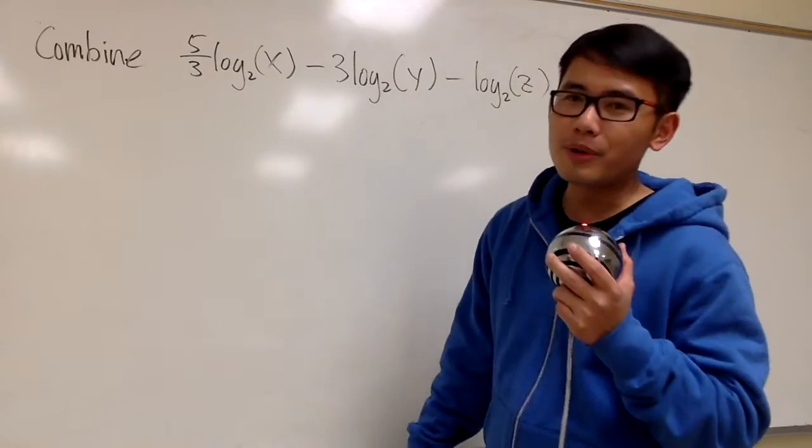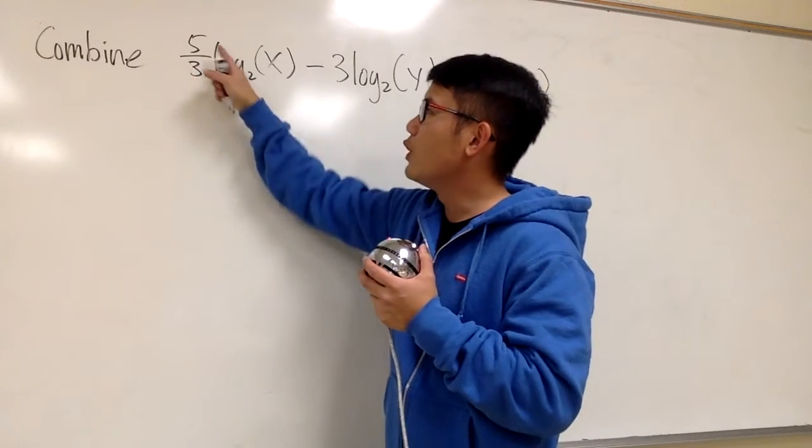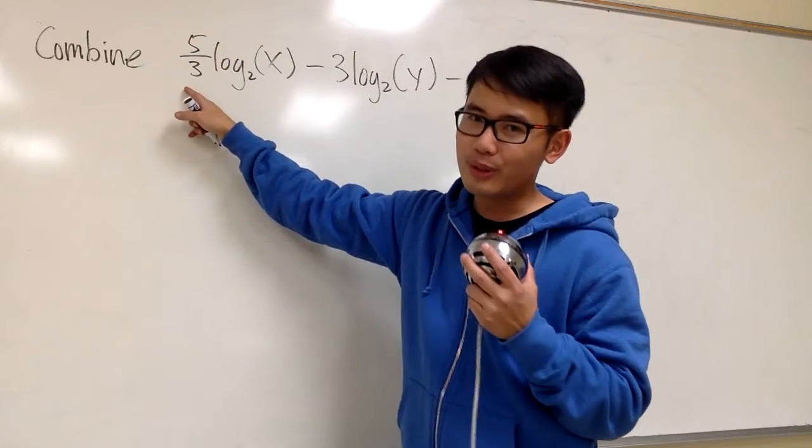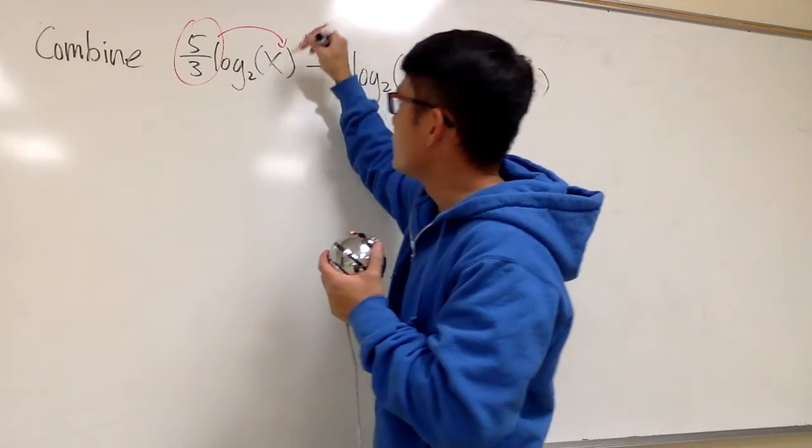As usual, we are going to fix the numbers in front of each term. For example here, we have 5 over 3, that's no good, but it's a really easy fix. I'm going to take this and bring that to the exponent for the x.